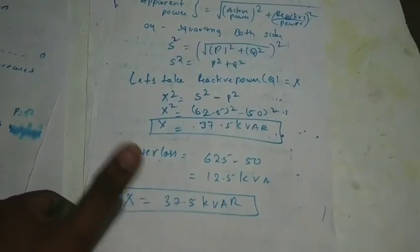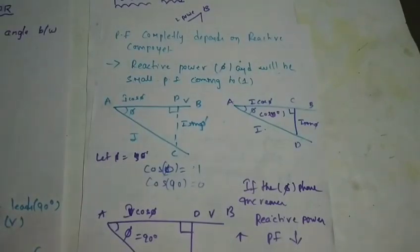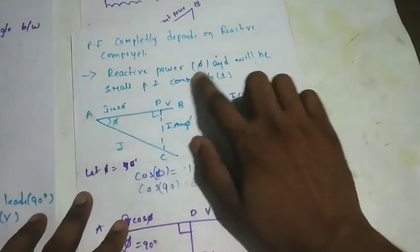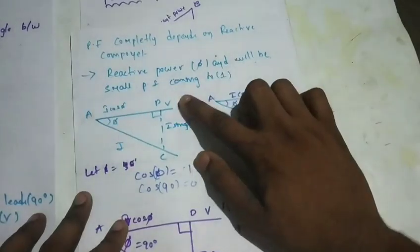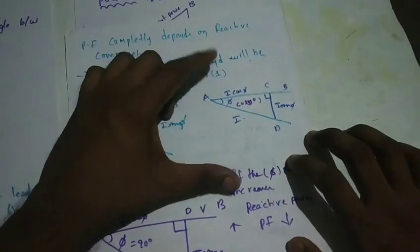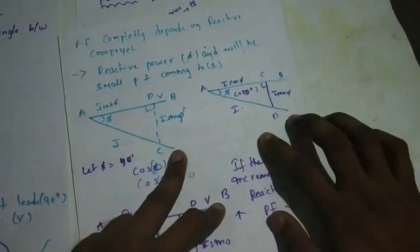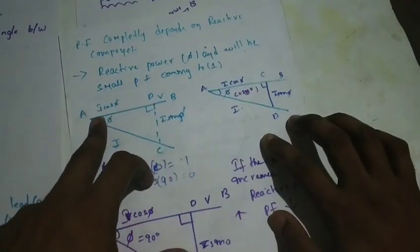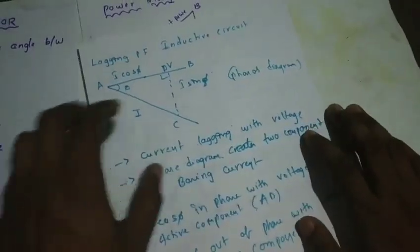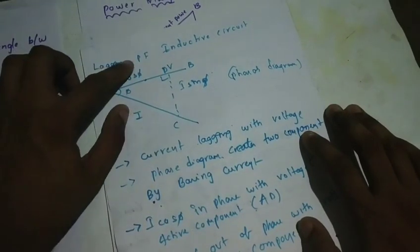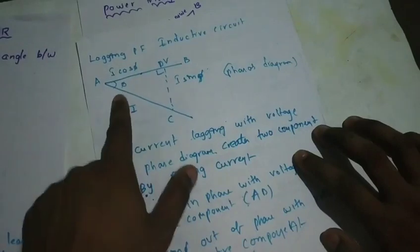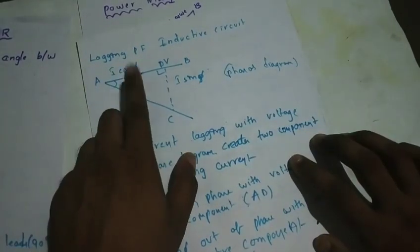The power factor is dependent on the reactive power. When the reactive power is higher, the power factor is lower. Power factor is the cosine of the angle between voltage and current. If we have a lagging power factor, it is an inductive circuit where the voltage is leading and the current is lagging.